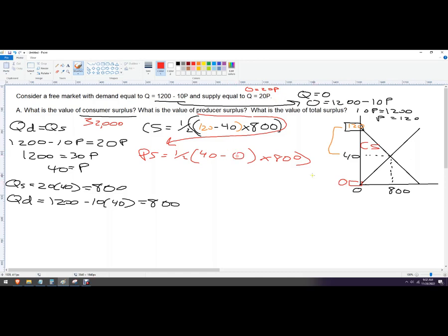So 40 minus zero. So here load up this guy and we've got 40 times 800, 32,000. And then half of that is 16,000. 16,000 is the producer surplus.